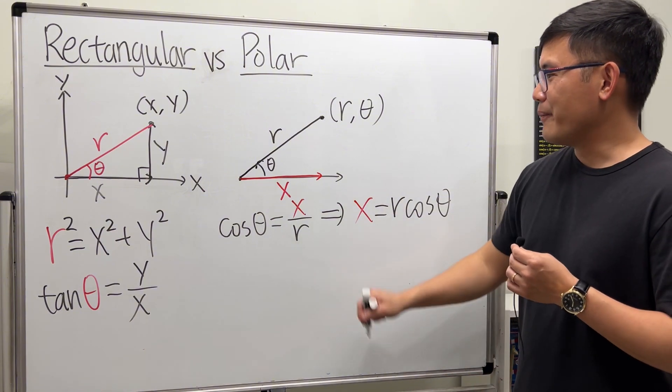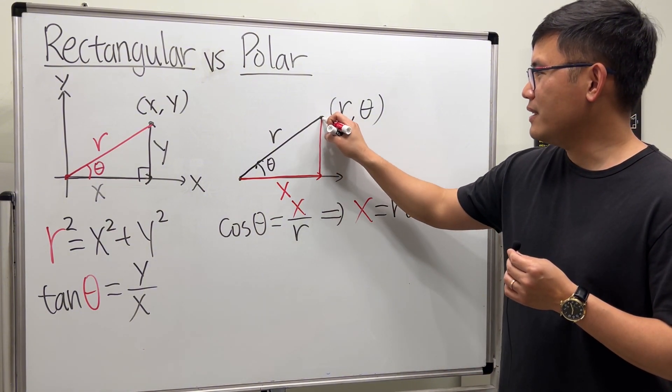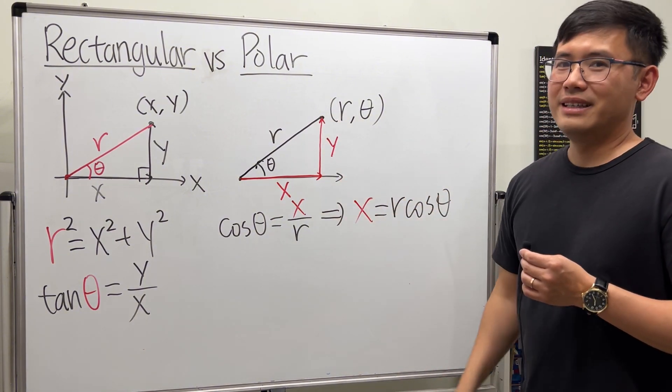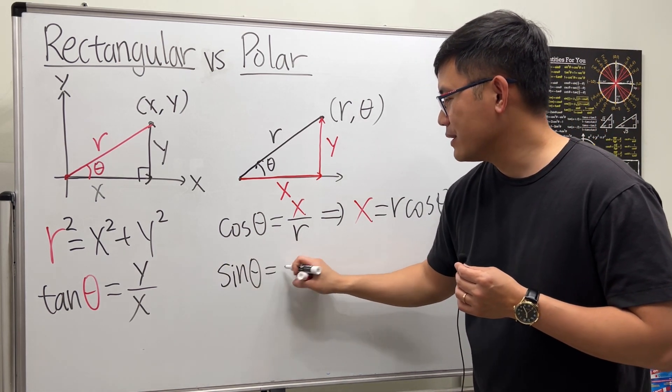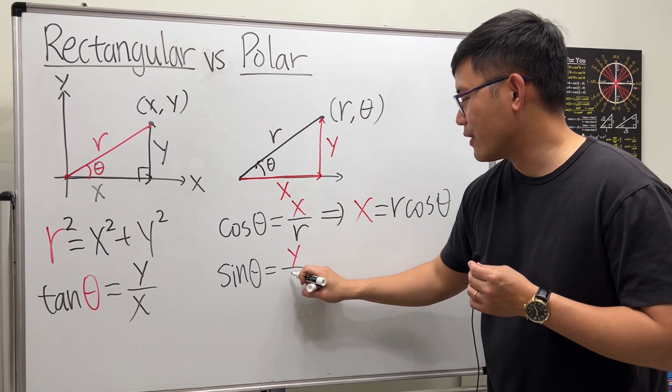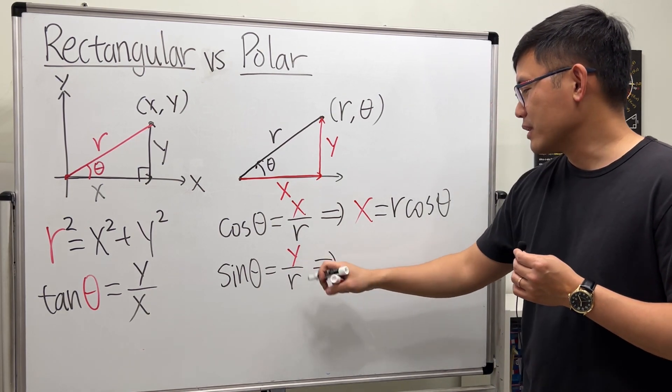And that's the opposite, so we use sine. Sine theta equals opposite over hypotenuse, and multiply both sides by r.